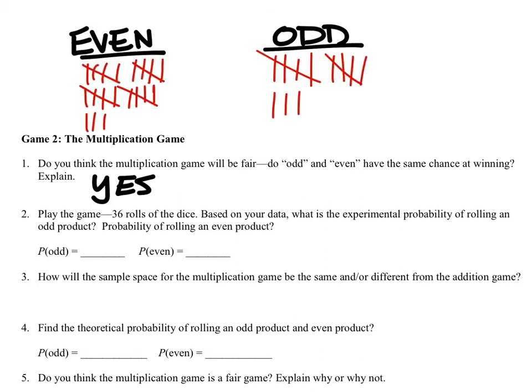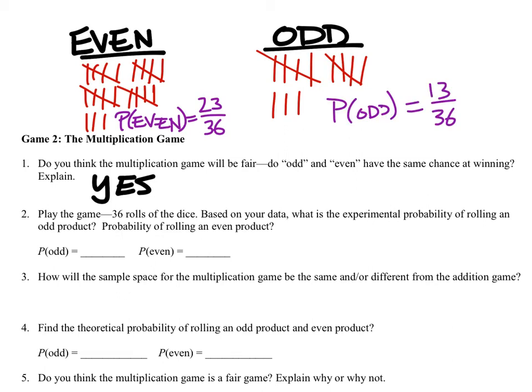After 36 rolls of the multiplication game, we got 23 evens and 13 odds. The experimental probability of evens is 23 out of 36, and of odds is 13 out of 36. These are experimental probabilities because we actually rolled the dice. Based on this data, the game does not look fair — there were about 10 more evens than odds.